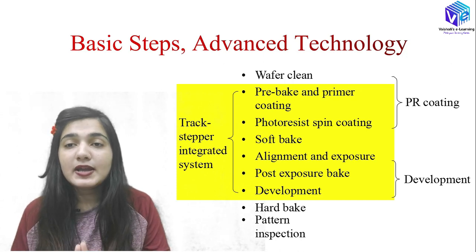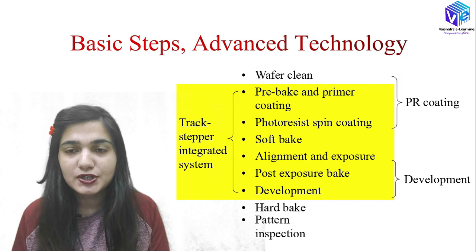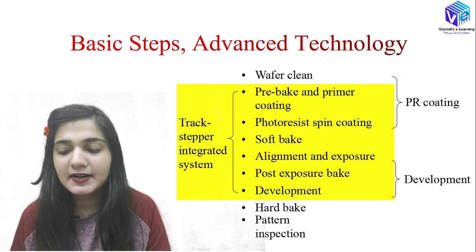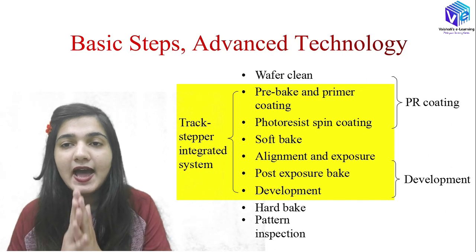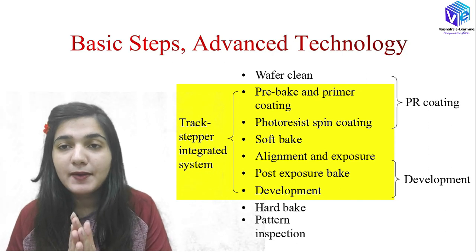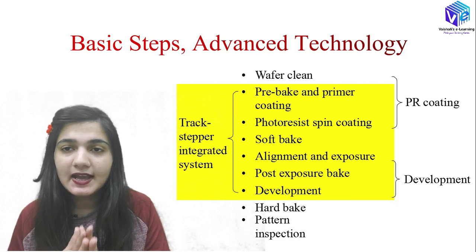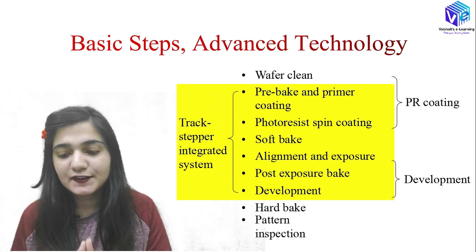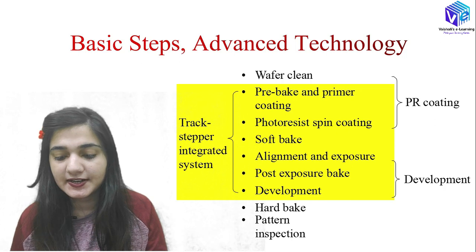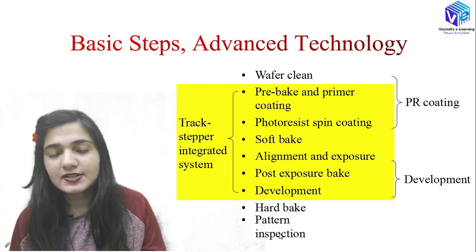In the development phase, we are removing the softened portions of the photoresist. In the alignment and exposure, we are aligning our mask on the wafer and providing light of a particular intensity, which changes the structure and characteristics of the photoresist underneath it. Then we have the hard bake and the pattern inspection steps.